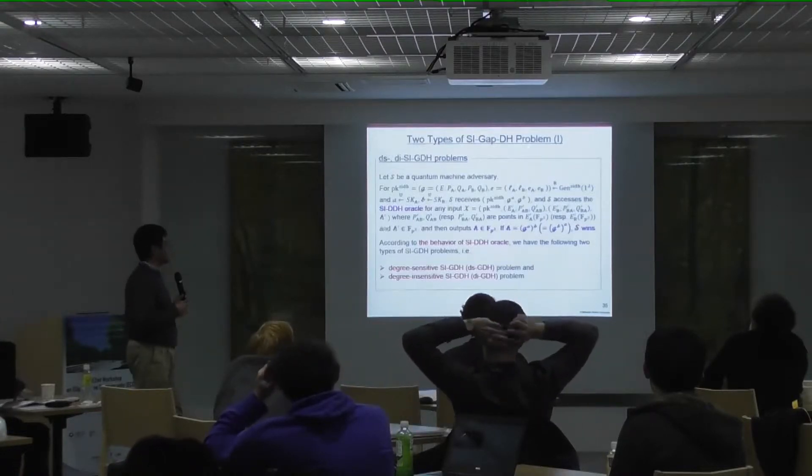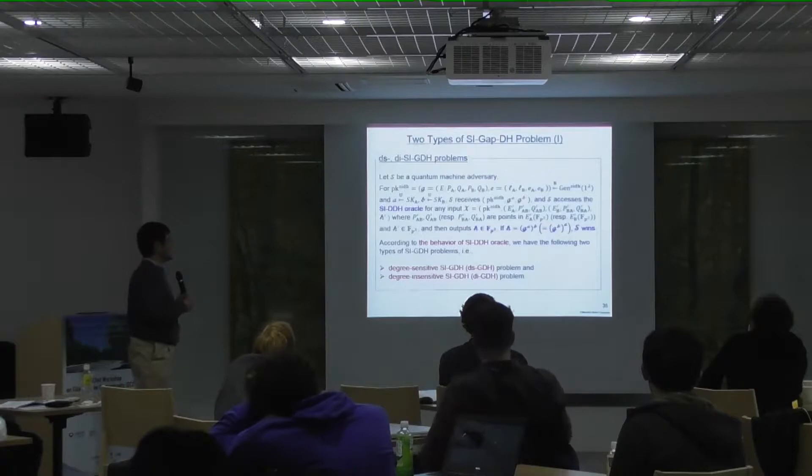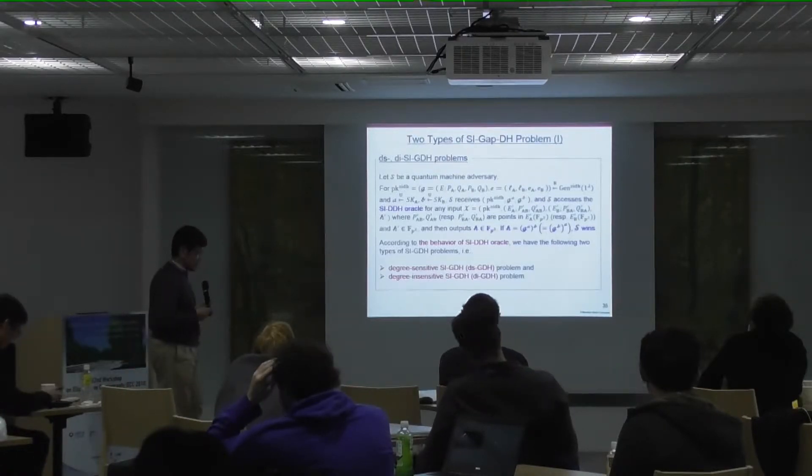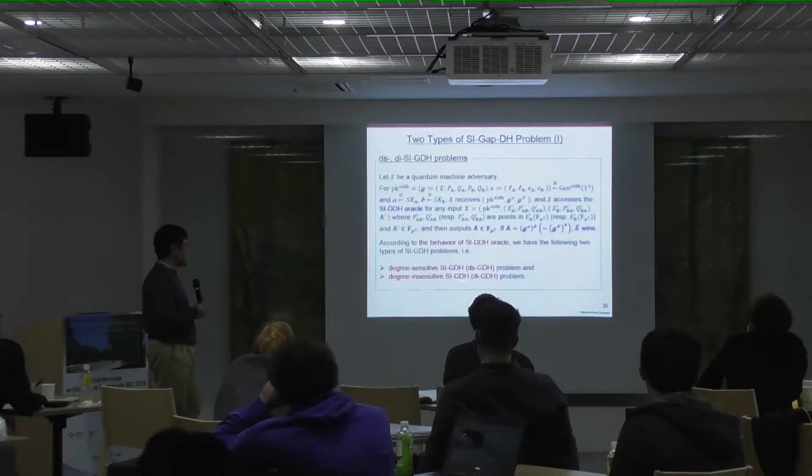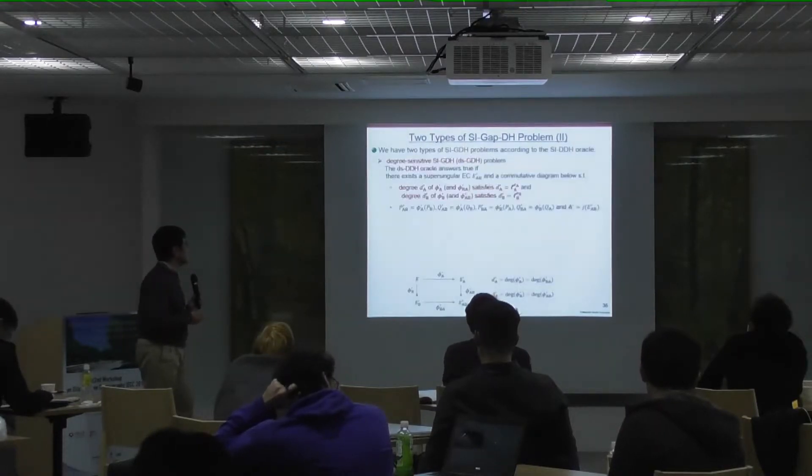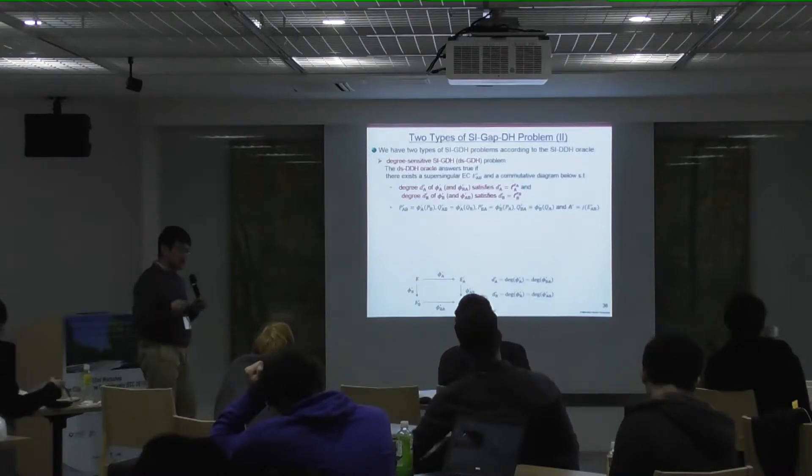For security proof, we consider two types of SIDH-AKE protocol of the GAP DH problem. As I said before, the GAP DH problem, in such a problem, adversary has access to the DDH oracle. And then, the aim is to compute the value of the DH value. According to the behavior of DDH oracle, we define two types of GAP DH. The first one is degree-sensitive.